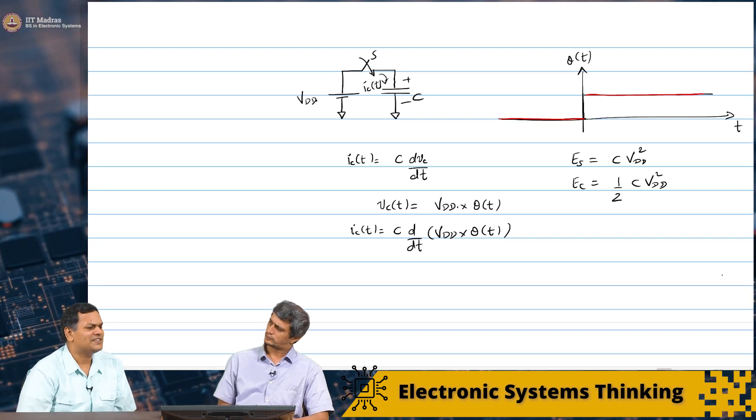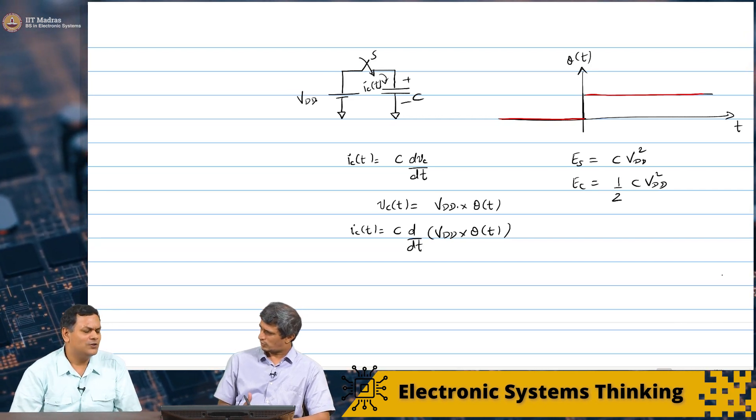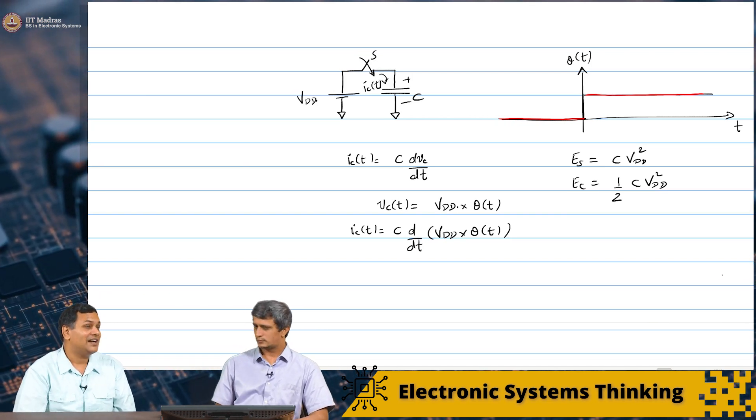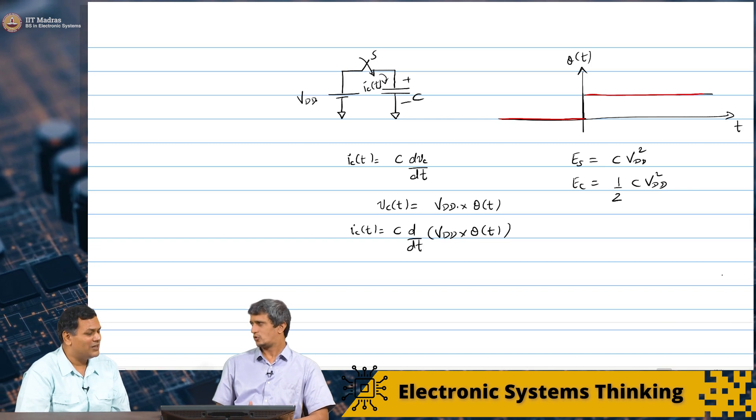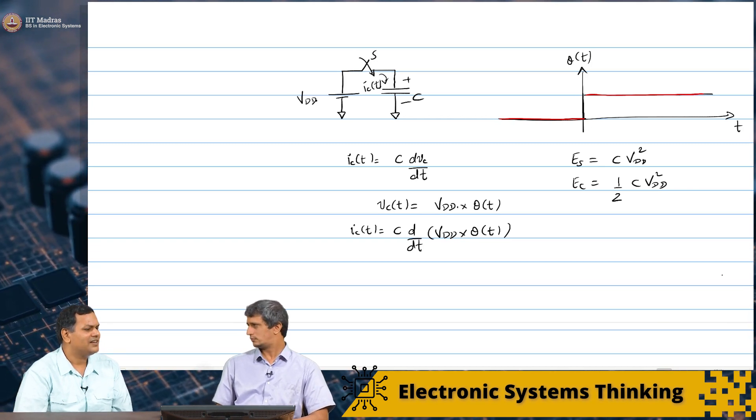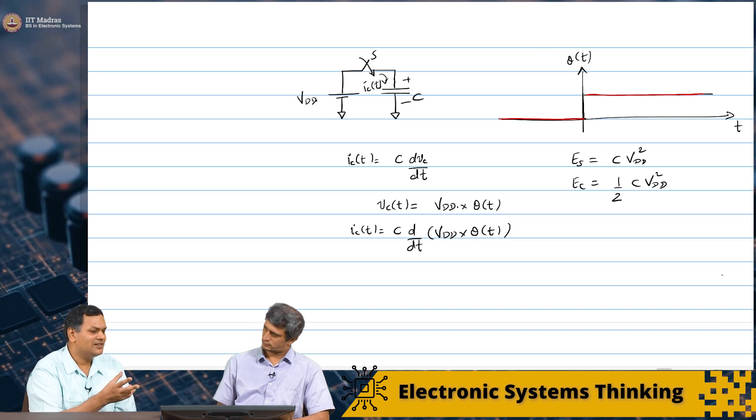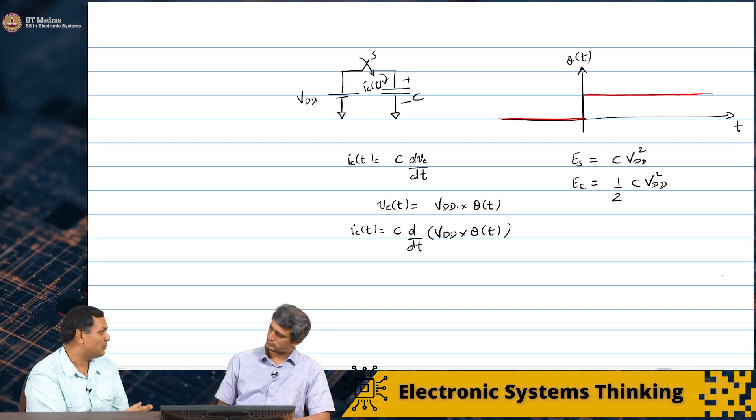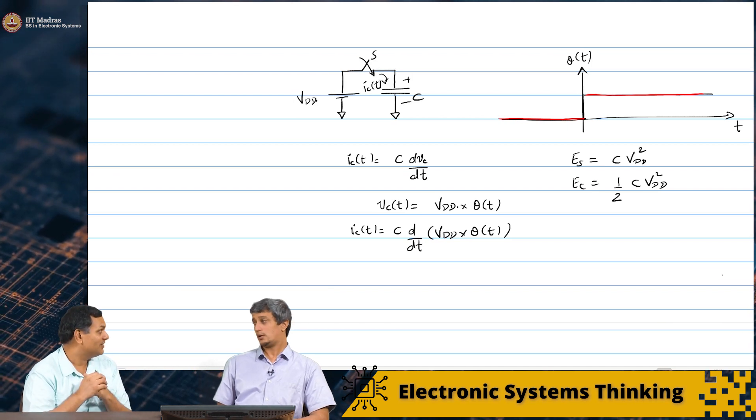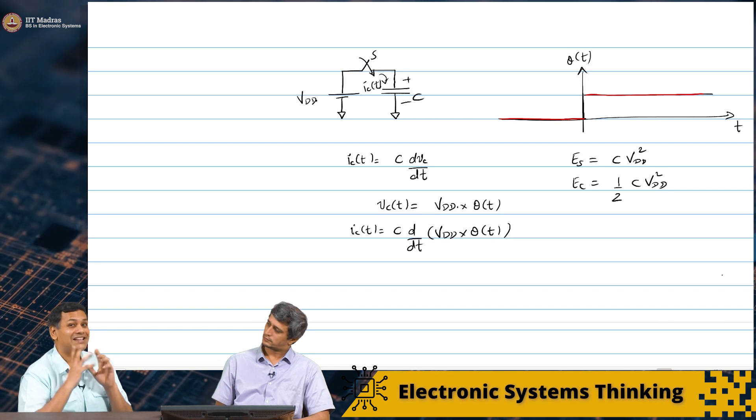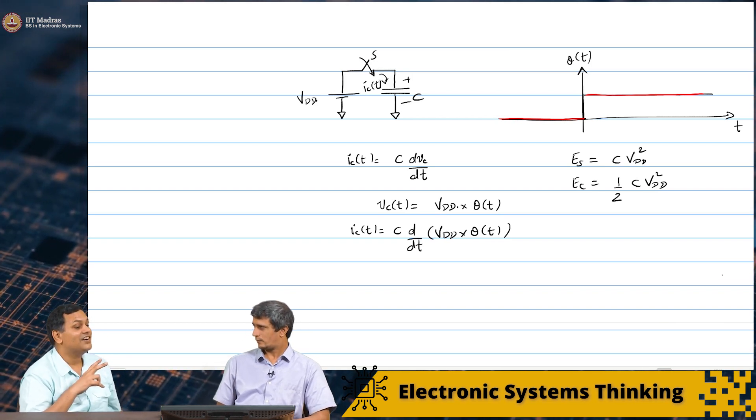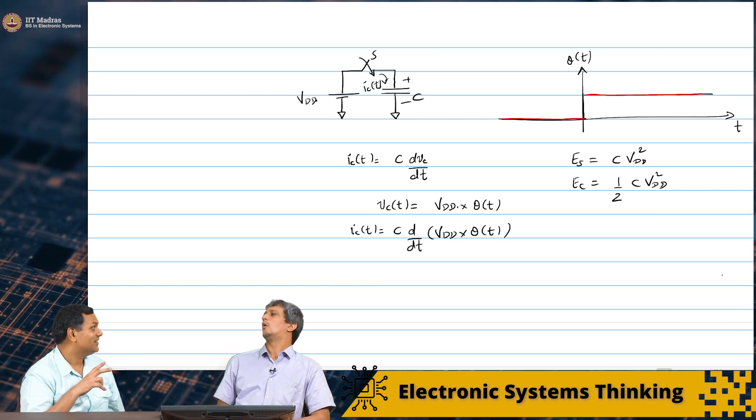Almost instantaneously. Makes sense. So, it is like you have a very large surge of current that charges the capacitor quickly and then it stops. And then it stops. Right. So, that is one way to look at it. But the energy. Energy. Yes. Right. Yes. We know is still C Vdd squared. Yes. Correct. Energy in the capacitor is half C Vdd squared.